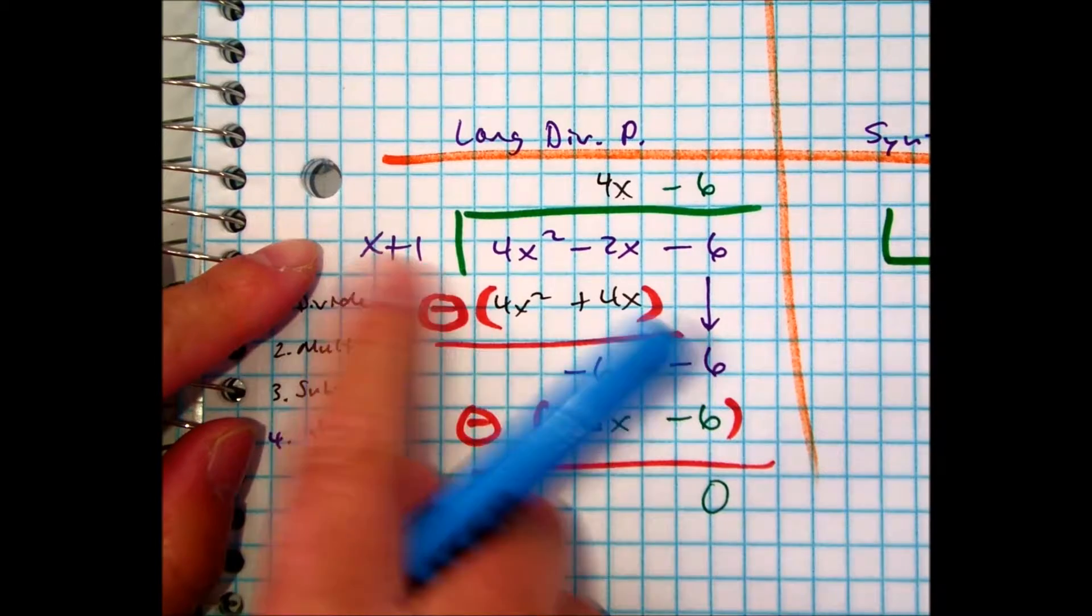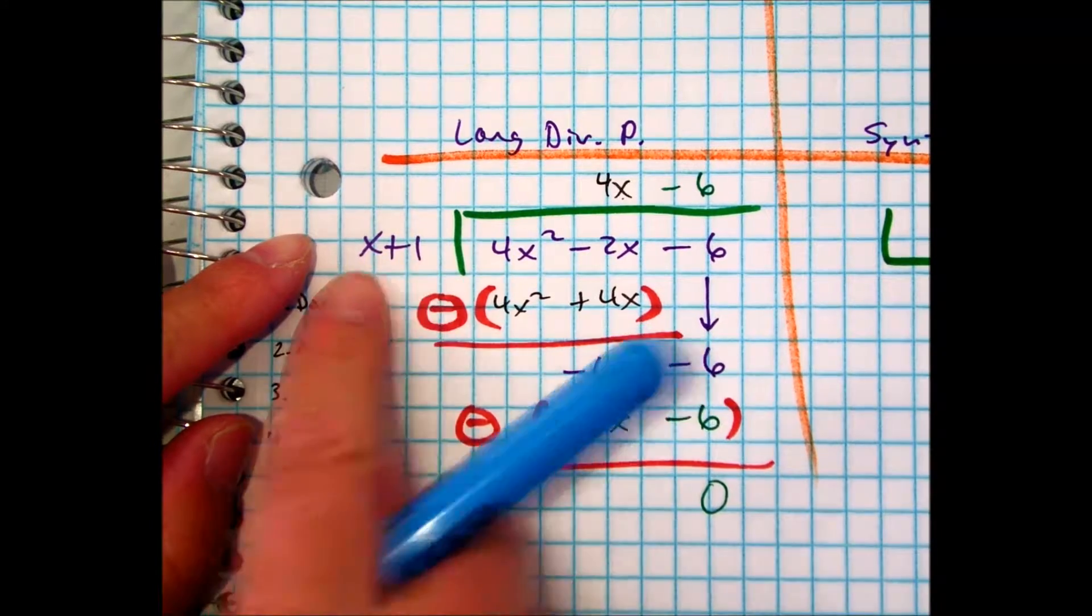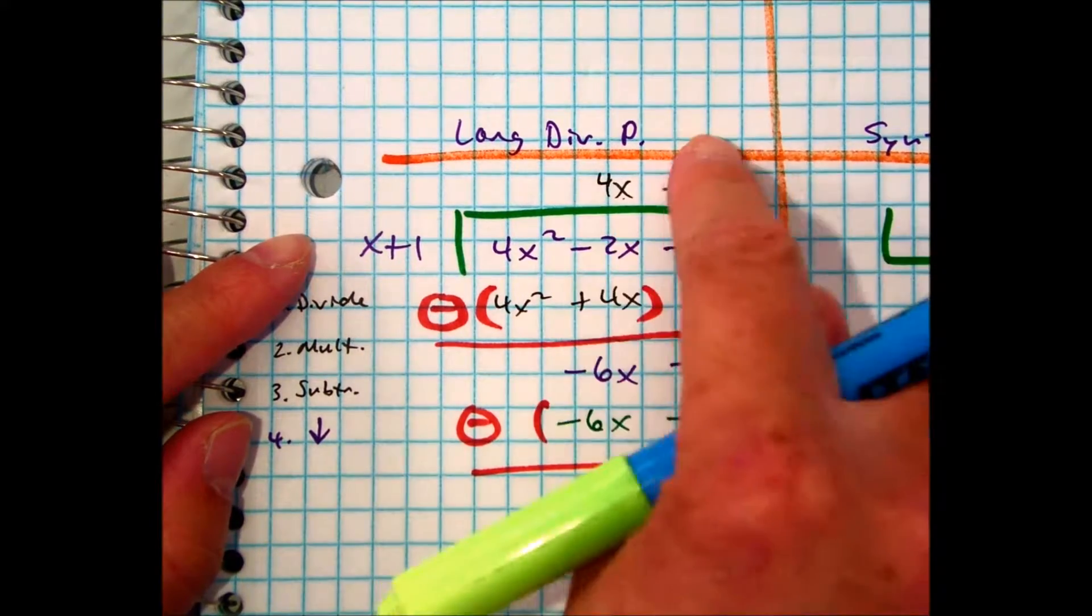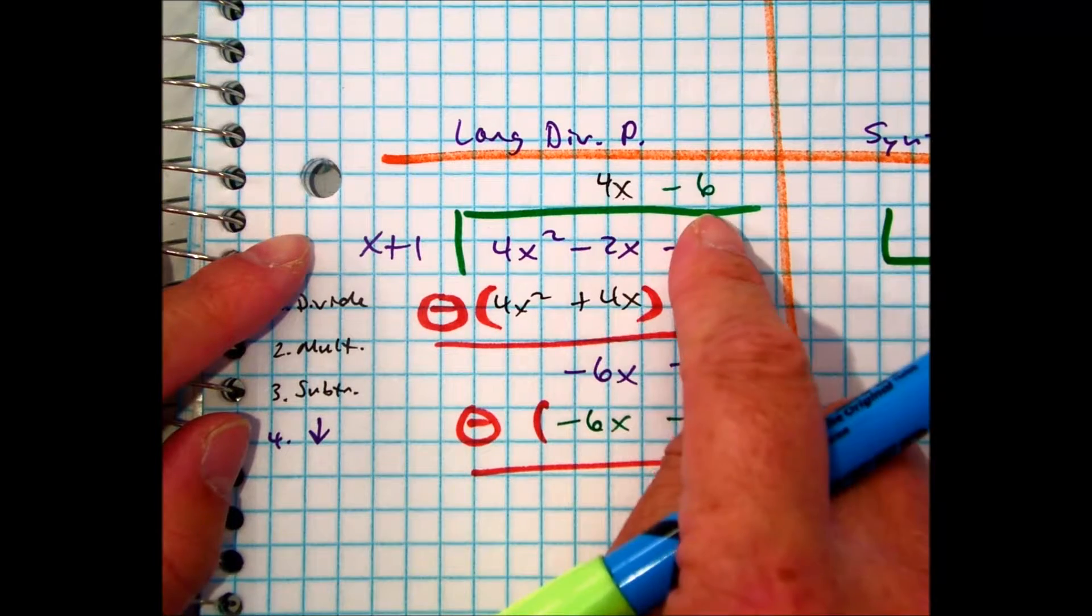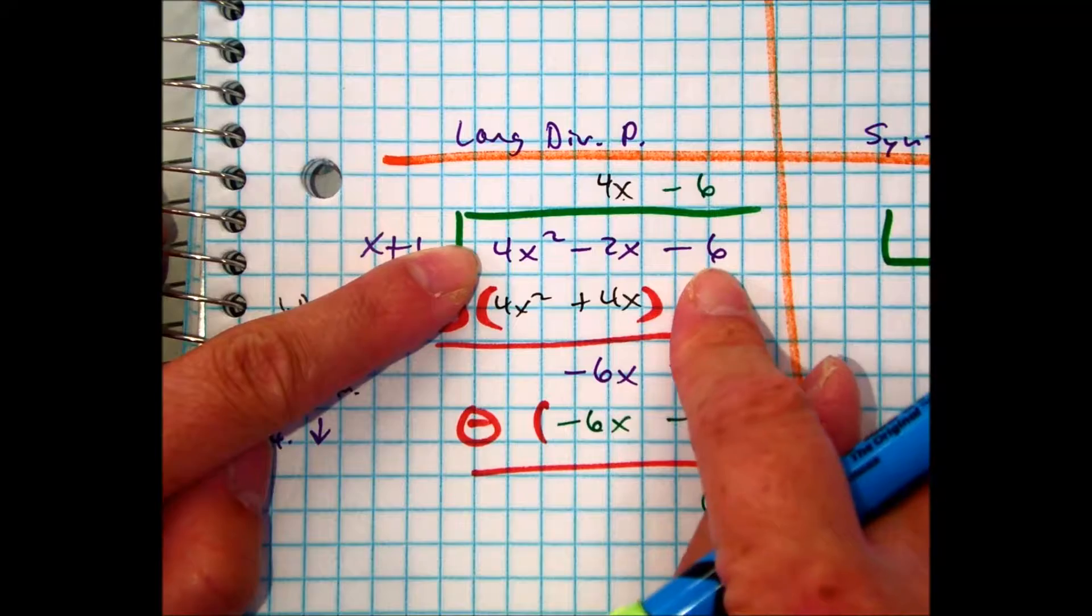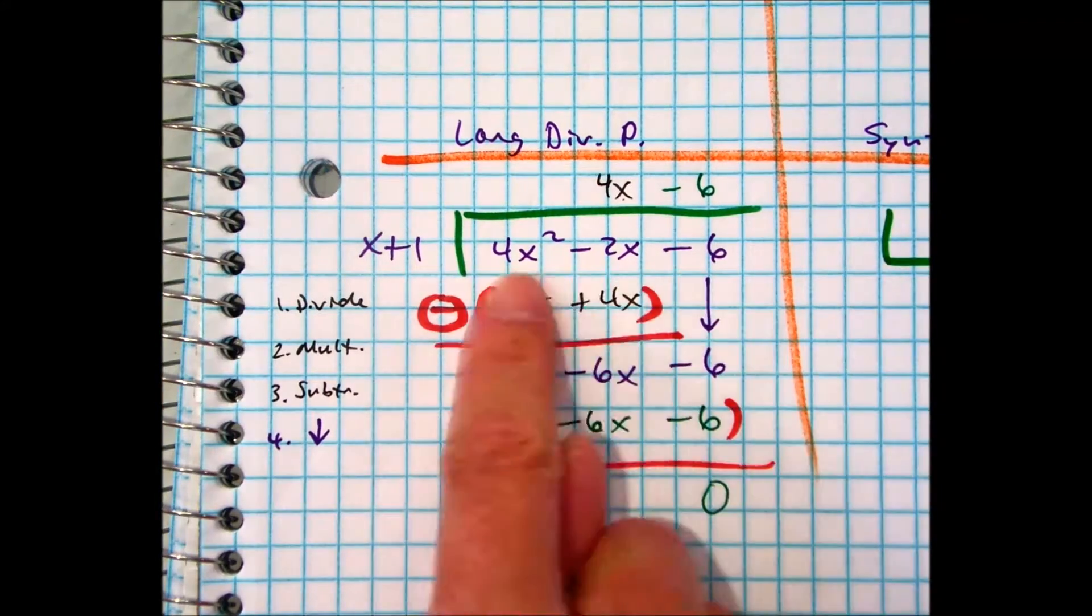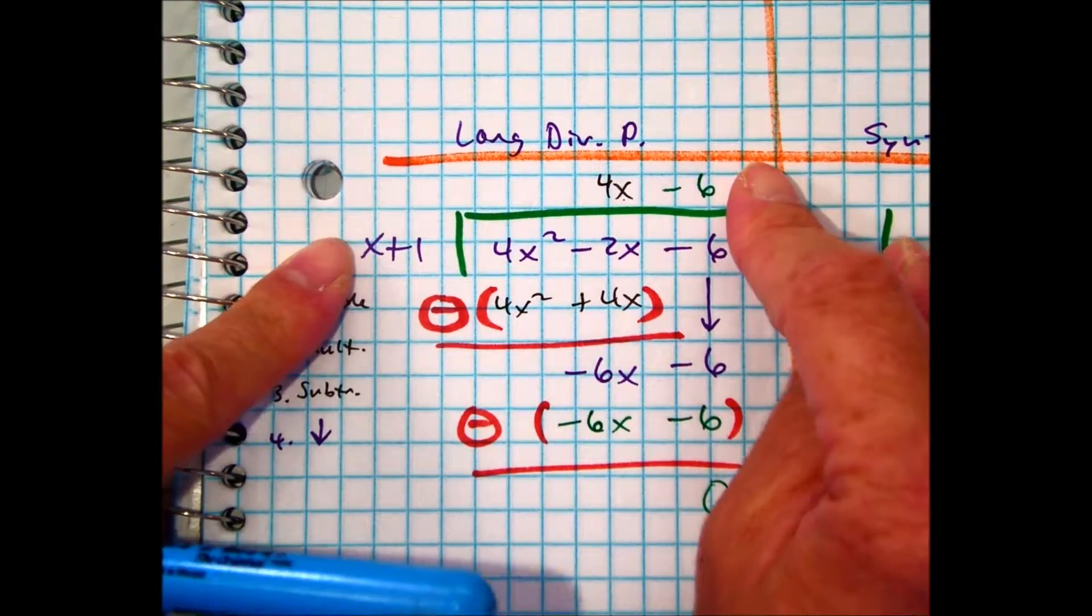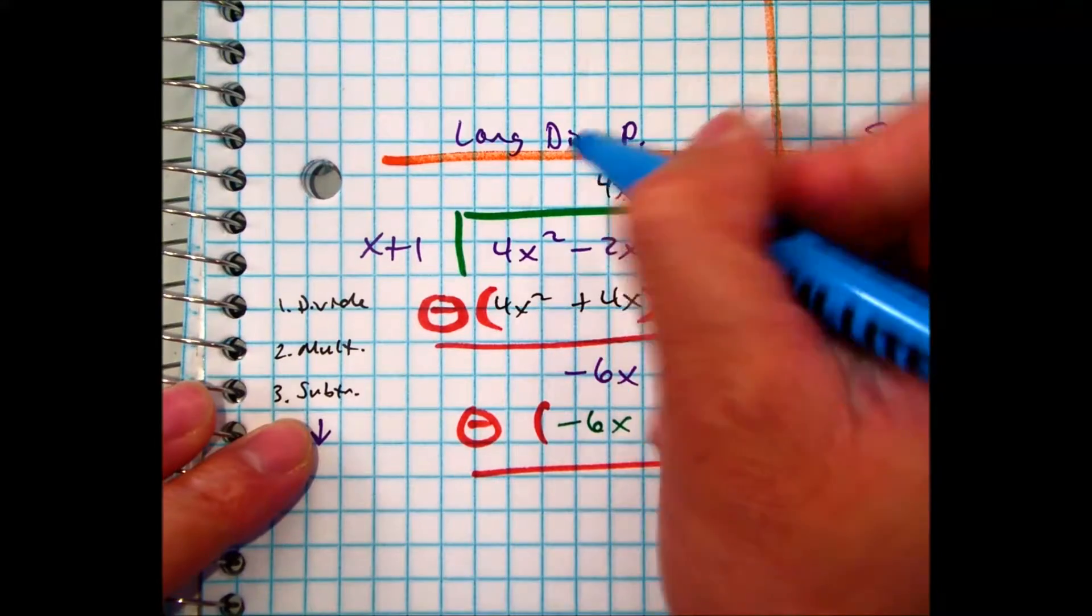If I take the binomial x plus 1, I put it into this polynomial, I get my answer 4x minus 6. If I multiply these two binomials, I get the bigger polynomial, okay? If I ask you to factor that, you get those two polynomials.